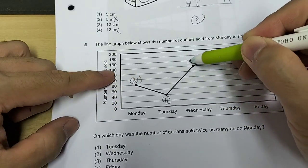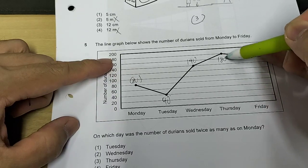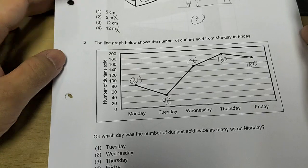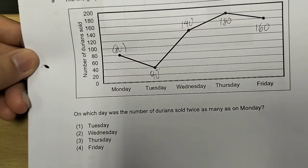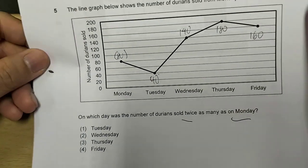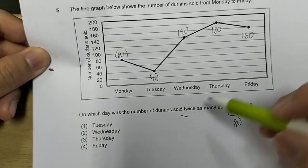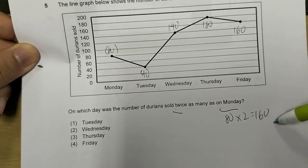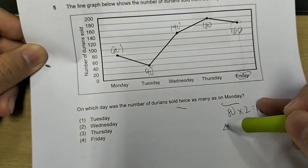Wednesday, this will be 140. Thursday, this is 180. Friday, this is 160. Writing this down helps you in your checking and it reduces errors. On which day was the number of durian sold twice as many as Monday. Monday, 80 were sold. So what is twice of this? I times 2, 160. I need to look for the day that says 160 and that is Friday. So answer is 4.